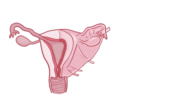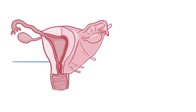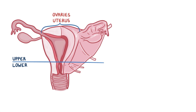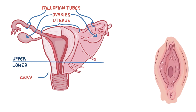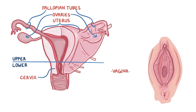The female reproductive system is divided into upper and lower genital tracts. The upper genital tract consists of the uterus, ovaries, and fallopian tubes. On the other hand, the lower genital tract consists of the cervix, vagina, and the external genitals, which includes the labia and the clitoris.